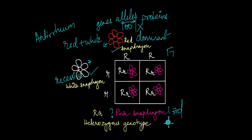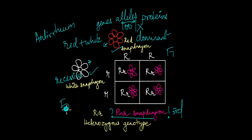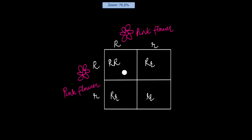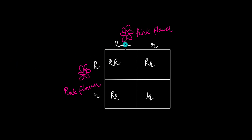An intermediate third phenotype is expressed in the F1 generation when you cross a homozygous dominant organism with a homozygous recessive organism. In the F2 generation, if you cross two of these offspring, the Punnett square for crossing two heterozygous pink plants gives you one homozygous dominant, two heterozygous, and one homozygous recessive.